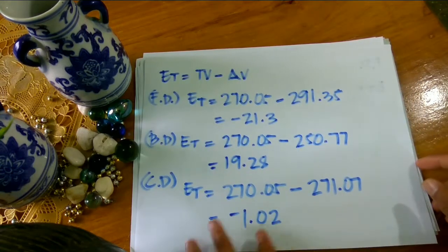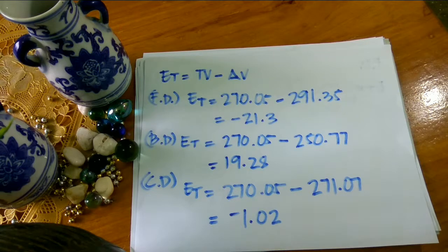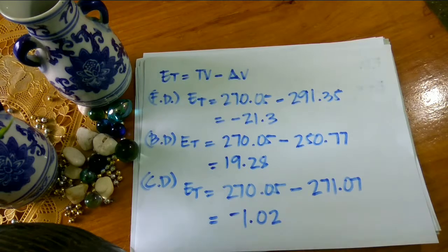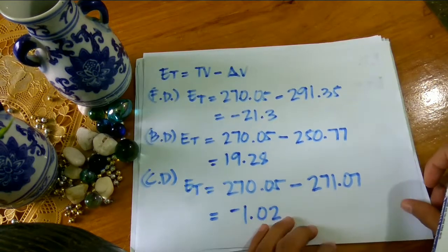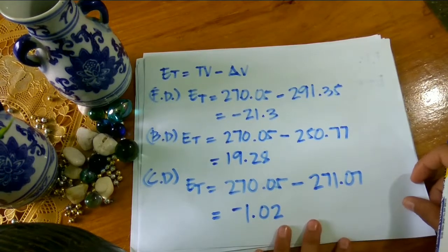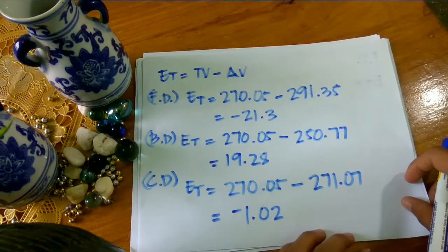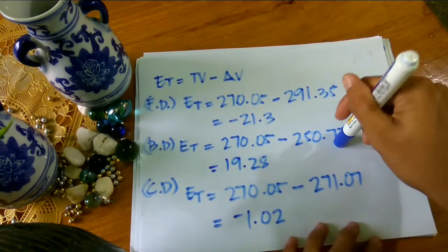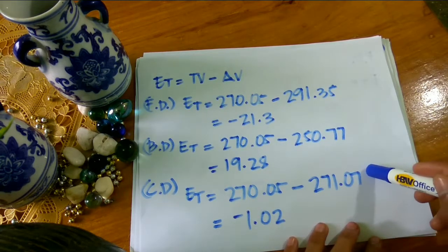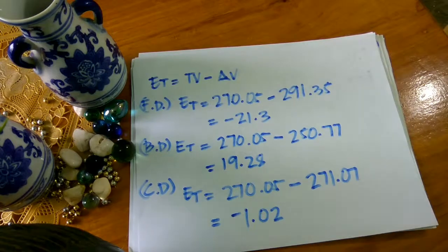So let's have a recap. As you can see, ang ating numerical differentiation ay may three methods: the forward, the backward, and the central difference. These three methods ay naghahanap ng slope ng function — it is like rise over run. The central difference is the most accurate kasi sya ang pinaka malapit na value sa ating true value, because the central difference is the average of the two — forward and backward — so mas malapit ang approximate value nya sa ating actual value. That's all for today guys, I hope na may natutunan at naiintindihan kayo about sa aking tutorial sa numerical differentiation. Bye bye!